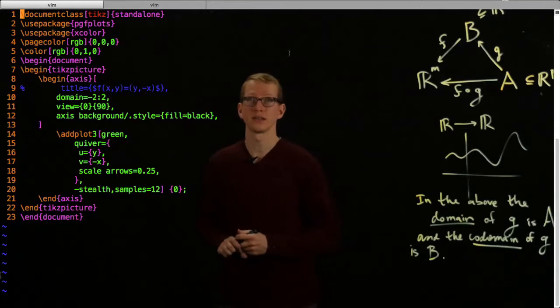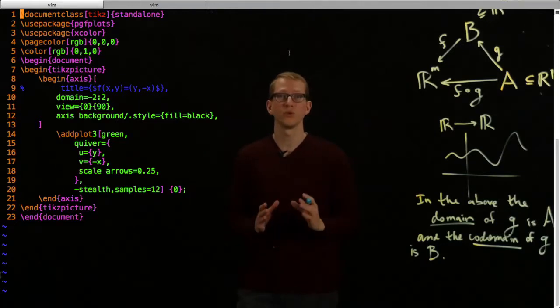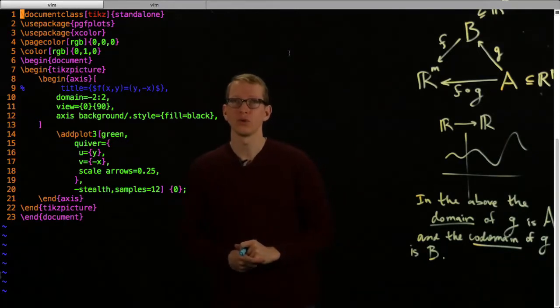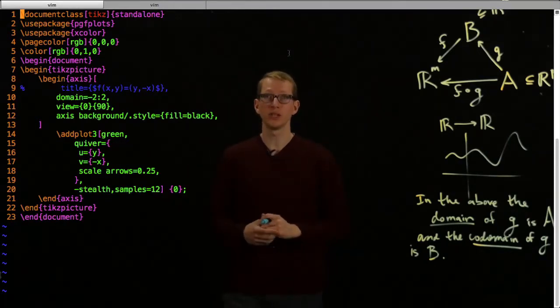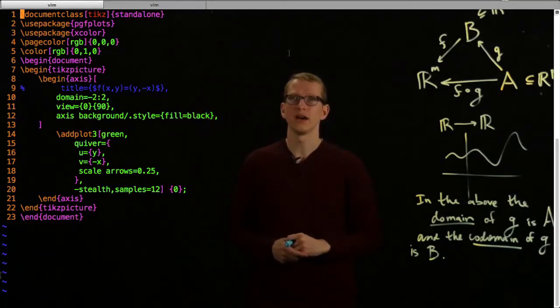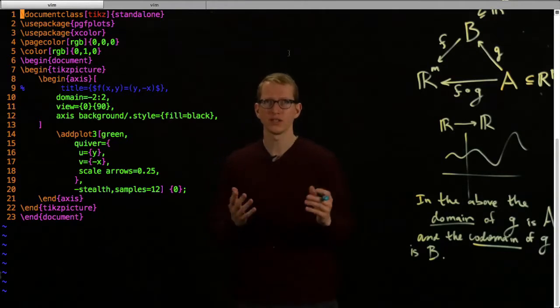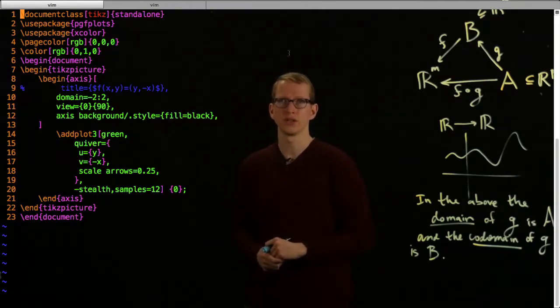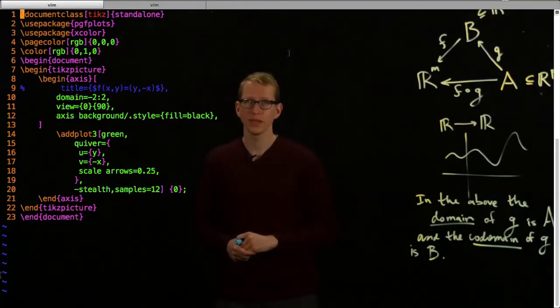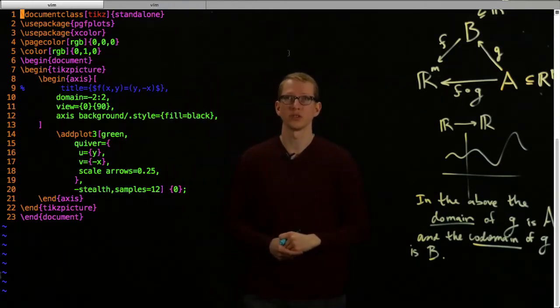We start off the document class with TikZ right over here. Standalone is just an option that tells us we want to just output the plot and absolutely nothing else. No border, nothing. The only packages that we're going to be using are just PGF plots. And as I mentioned before on one of the earlier tutorials on LaTeX, we're just going to include the package xcolor and change the background colors a little bit so that it matches with the background of these videos. We've changed the page color to black, and we'll also change the color of the actual writing to green. We begin the document and we just write the TikZ picture program.